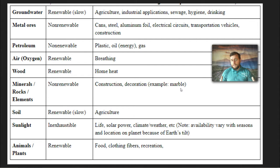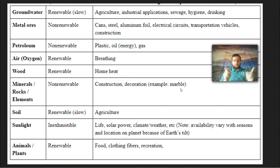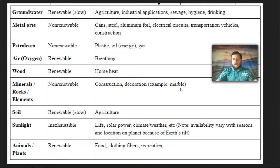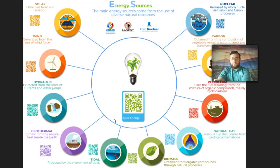Sunlight is inexhaustible — it powers life, solar power, and climate and weather all over the planet. But it is an unevenly distributed resource, which we'll talk about later. We also have plants and animals, which we use for all kinds of things. Food, clothing, fibers, recreation, medicine, and shelter are all things that we get from the biosphere.